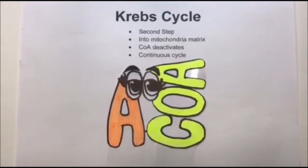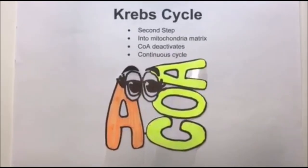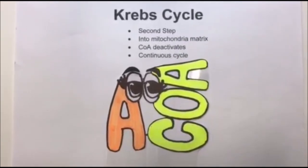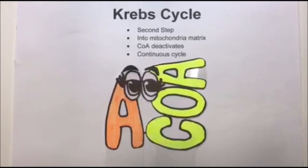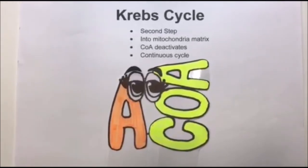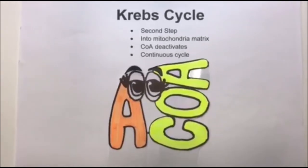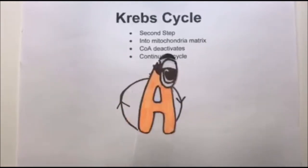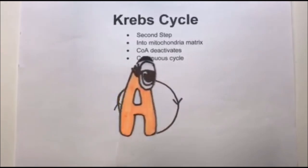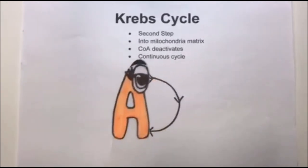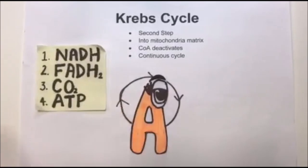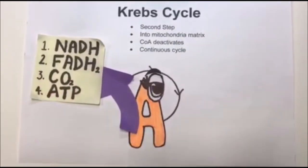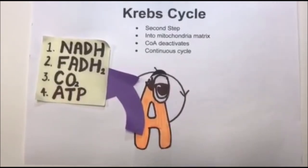Lastly, we have the Krebs cycle. This is the second step of cellular respiration. It takes place inside the matrix of the mitochondria. Here, coenzyme A deactivates or unbinds from acetyl. Acetyl then enters the Krebs cycle, where products such as ATP and carbon dioxide are formed. This is a continuous cycle that takes place in our cells.